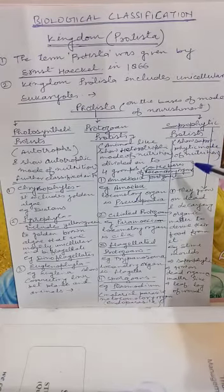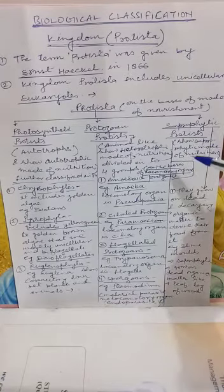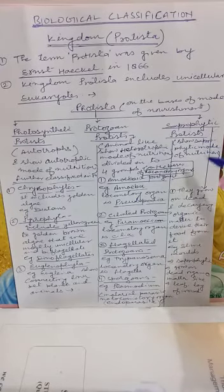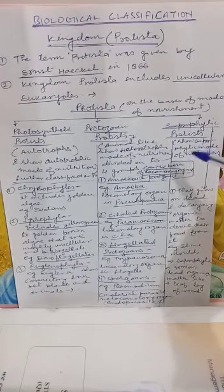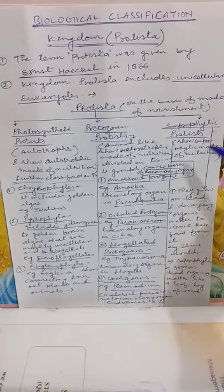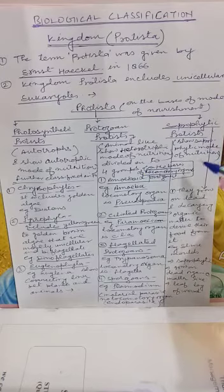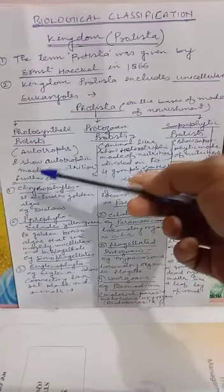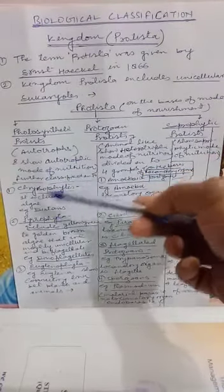Saprophytic protists are saprophytic in nature because they derive their nutrition from dead and decaying organic matter; they cannot prepare their own food. Photosynthetic protists are again divided into different categories.